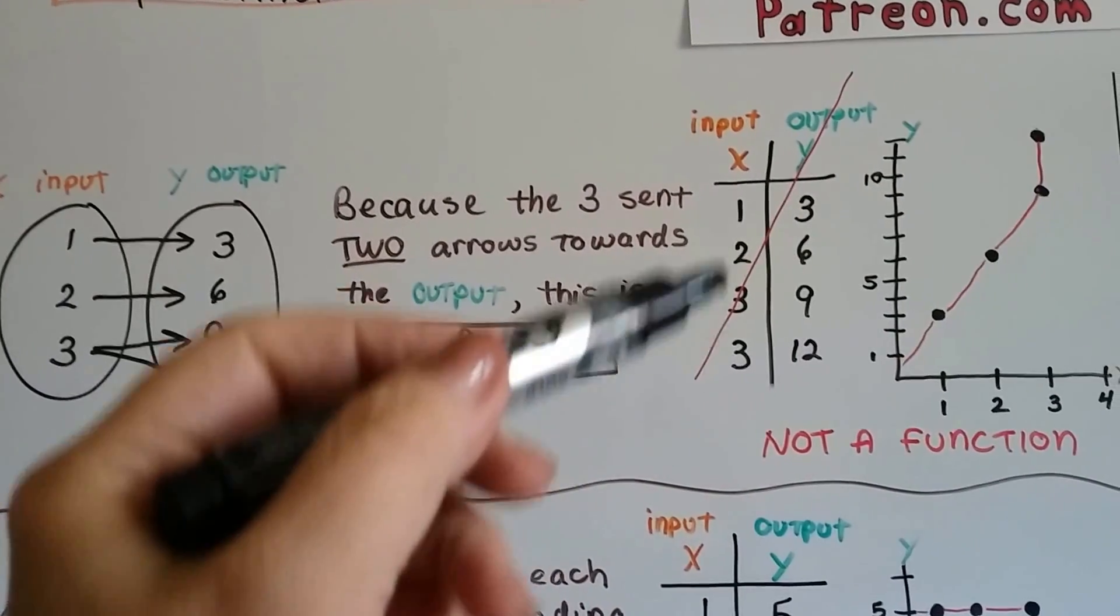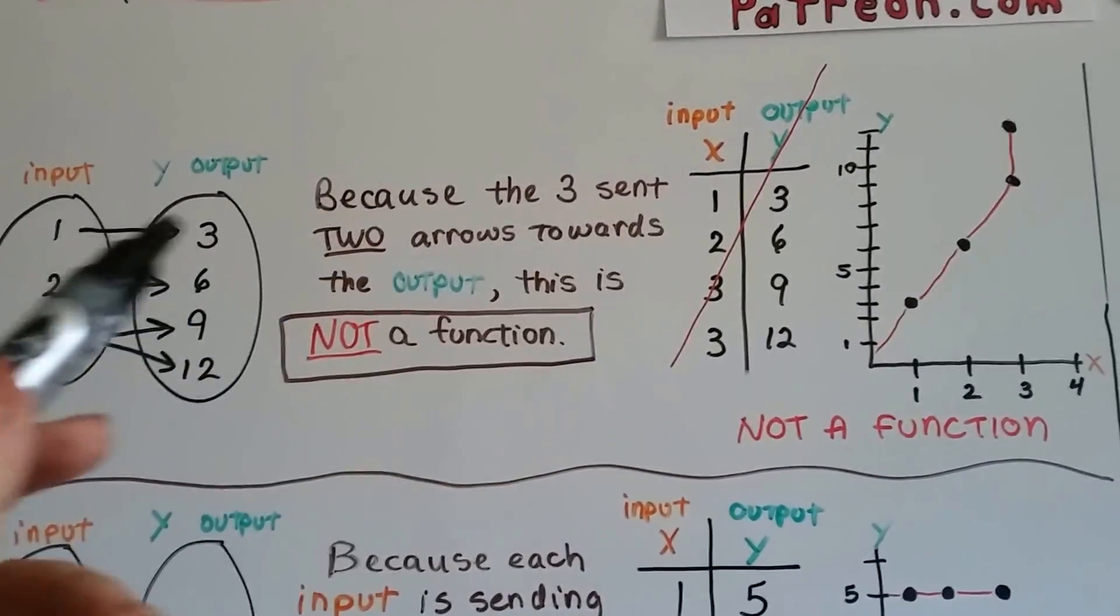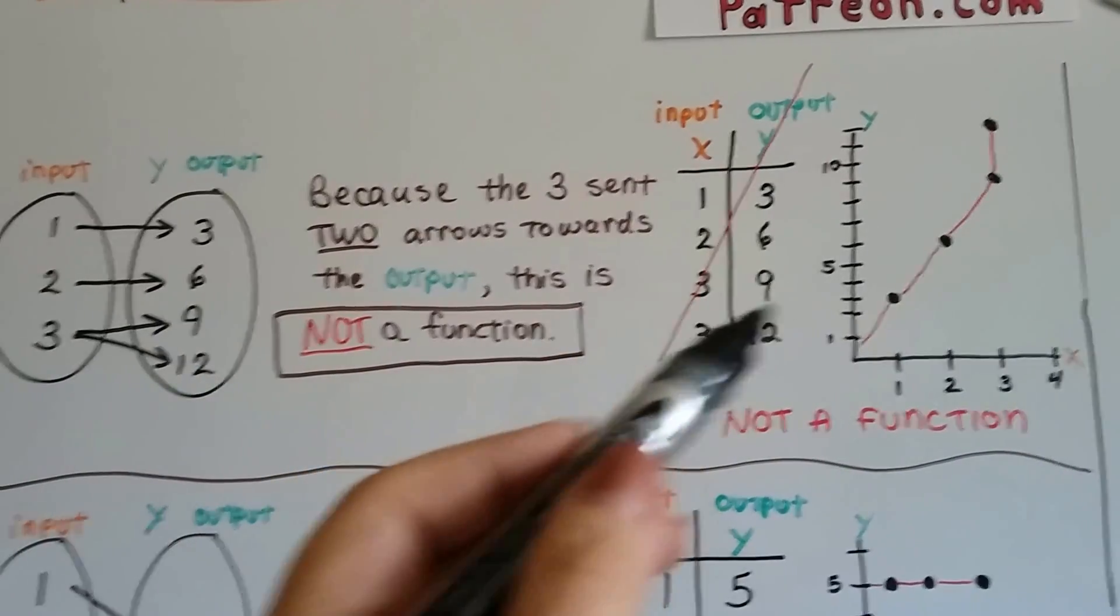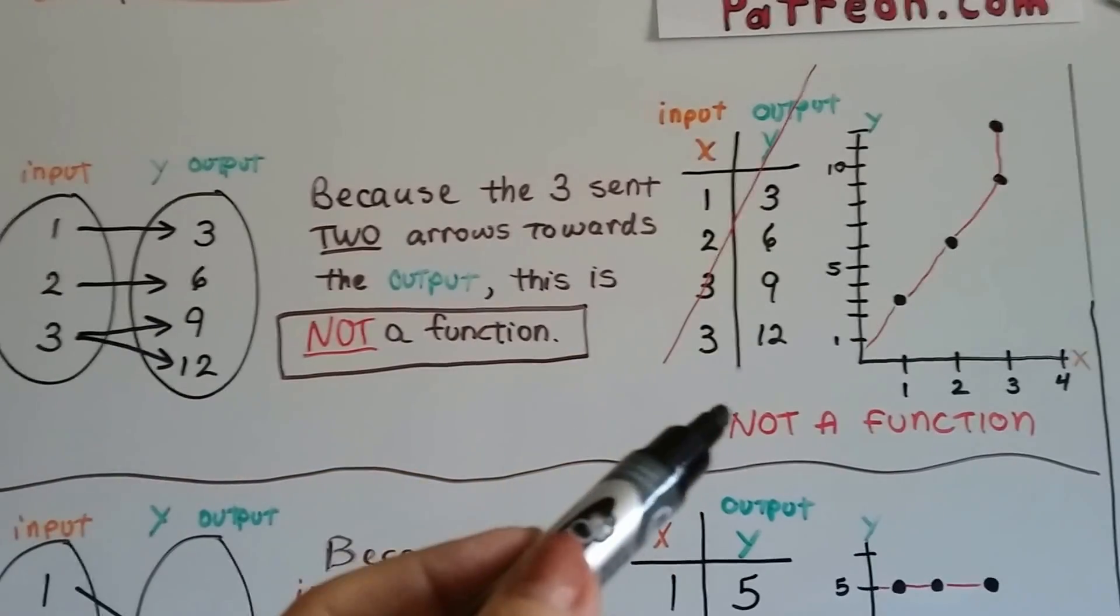It would look like this in a table. It would have a 1 and a 3, like here, and then the 2 and the 6, but then it would have a 3, 9 and a 3, 12. That's what it would look like on a table.